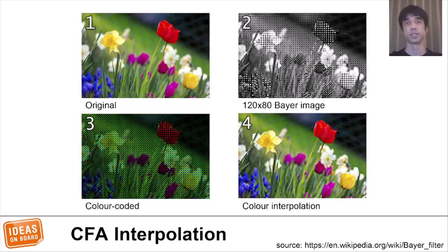Here's an actual example. In image 3, you can see that in the red part of the tulip, there are a bunch of black pixels. These are the pixels that do not have the red color filter, so they don't detect anything. In image 4, after CFA interpolation has been done, the tulip is all red, but it is pixelated, as the missing values have been interpolated from neighboring pixels.